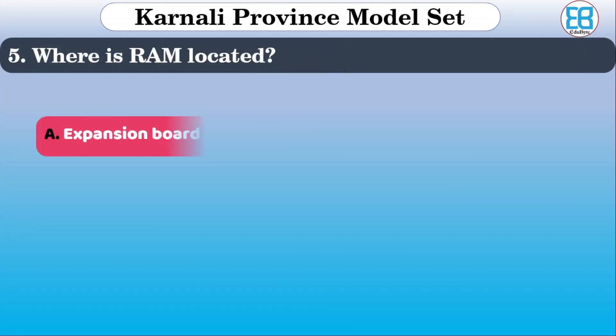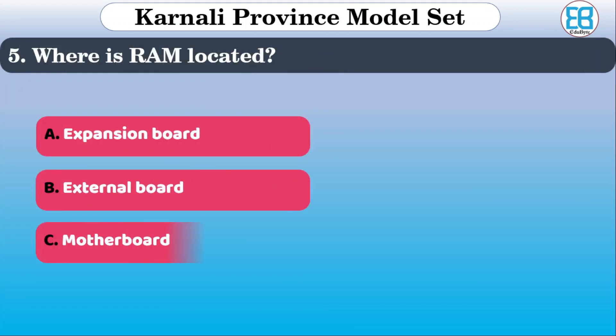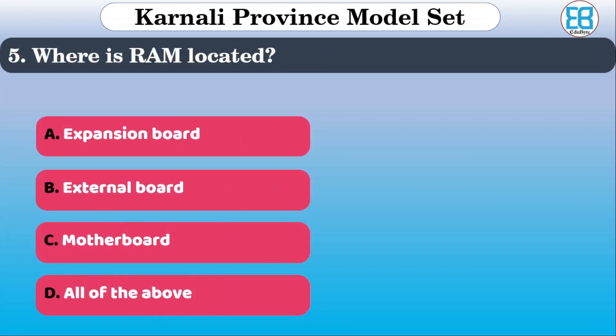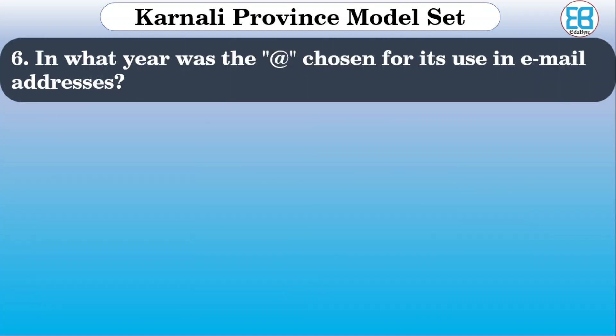Where is RAM located? The options are: expansion board, external board, motherboard, all of the above. The correct option is motherboard.